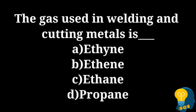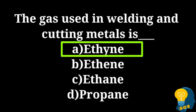The next question is: the gas used in welding and cutting metals is — option A: ethyne, option B: ethene, option C: ethane, option D: propane. The correct answer is option A, ethyne.